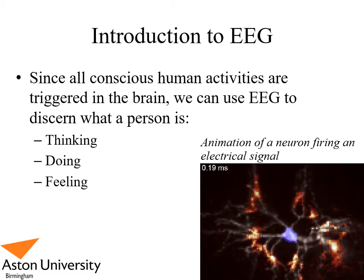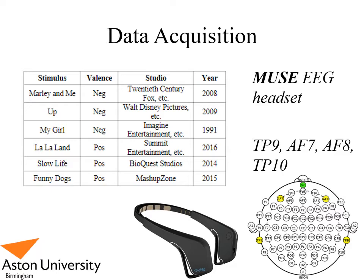Since all conscious human activities are triggered within the brain, we can use EEG to discern what a person is thinking, feeling, and doing.